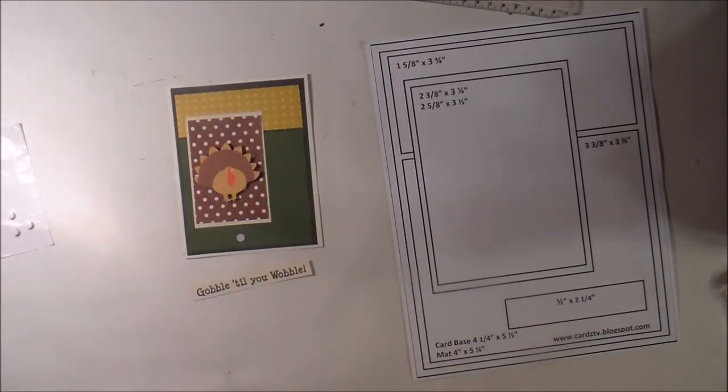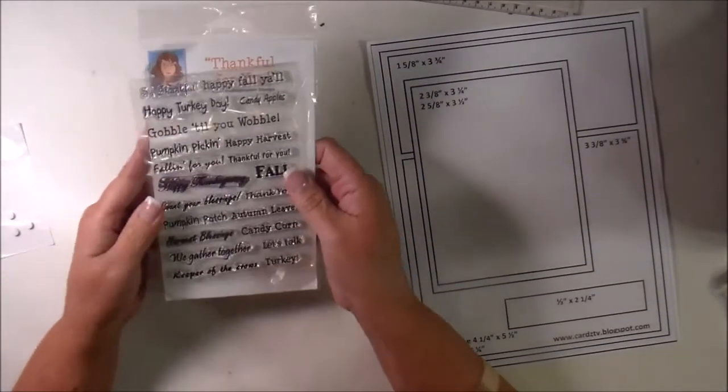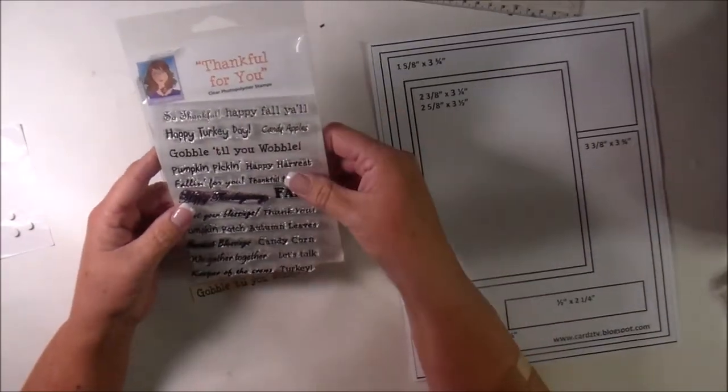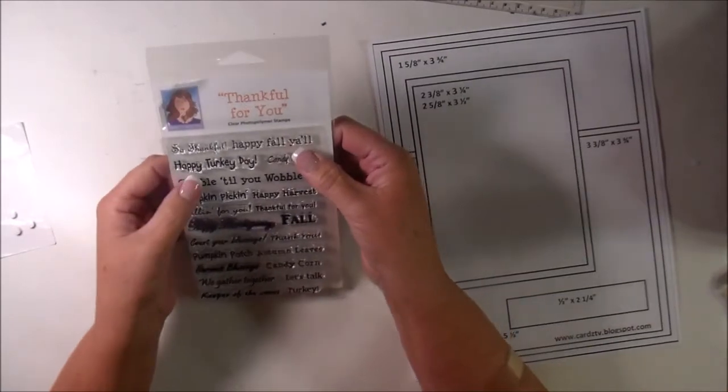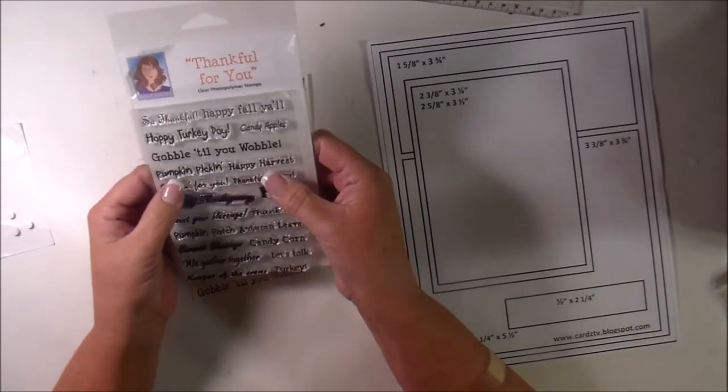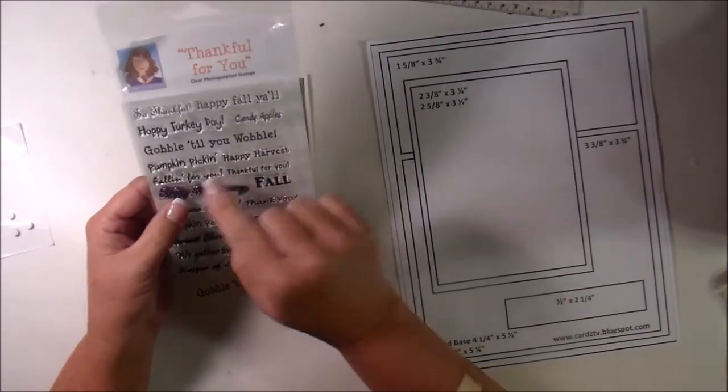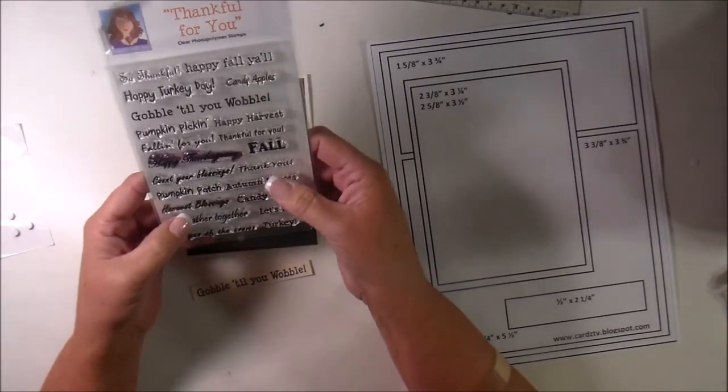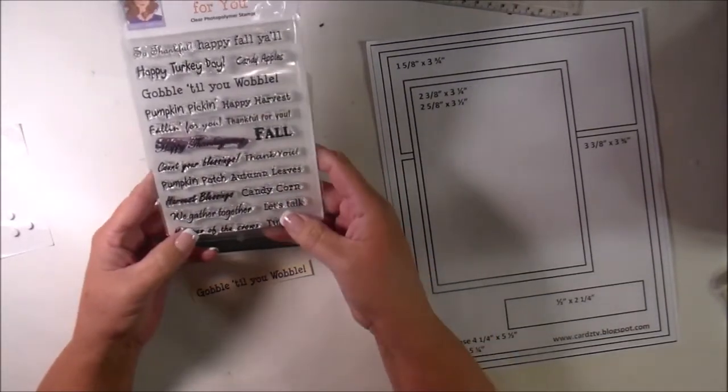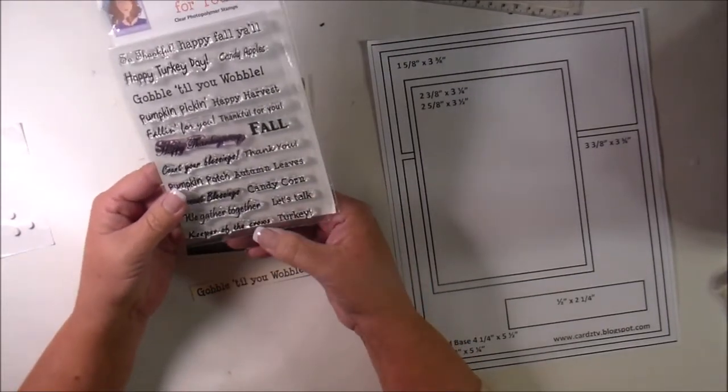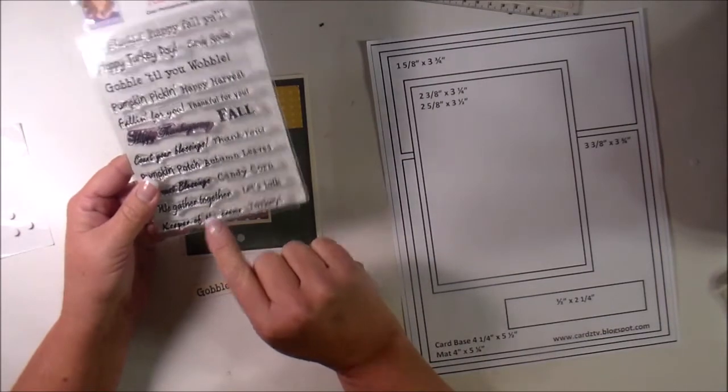And then the stamp set that I'm going to be using, which I am going to leave this out on my craft table because I'm going to be making Thanksgiving cards. It's called thankful for you. So it's so, so thankful. Happy fall, y'all. Happy turkey day. Candy apples. I'm using gobble till you wobble. Pumpkin picking. Happy harvest. Falling free. Oh, that was cute. Thankful for you. Happy Thanksgiving fall. Count your blessings. Thank you. Pumpkin patch, autumn leaves, harvest blessing, candy corn. We gather together and let's talk and then keeper of the crows and turkey. Oh, that'd be cute for a scarecrow themed card, right?